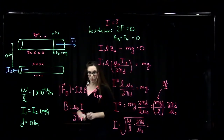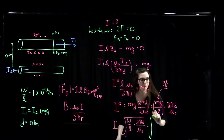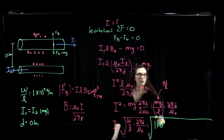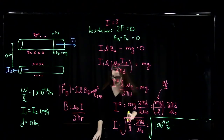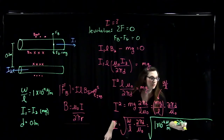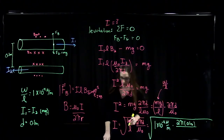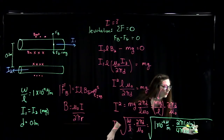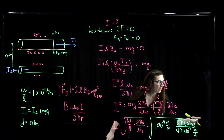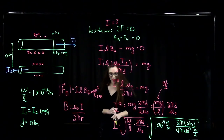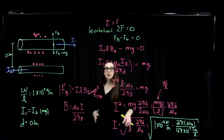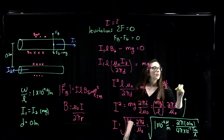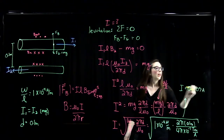Plugging in the values: weight per unit length is 1×10⁻⁴ N/m, times 2π times 0.1 m, divided by μ₀ which is 4π×10⁻⁷ T·m/A. The current through each wire for the top one to levitate is equal to 0.707 amperes.